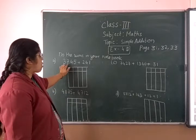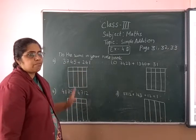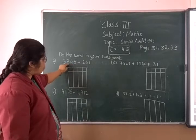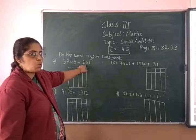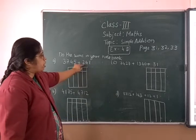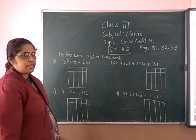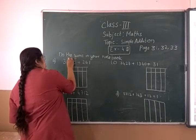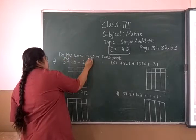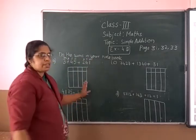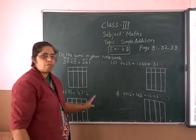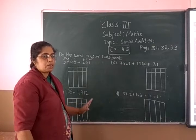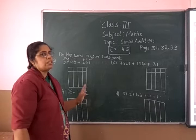So now see — 3,000. First of all, you read the number. Read the number, then only you solve. Read 3,745. 3,745 plus 2,000. So what you have to write in the box — you write all the numbers: 1, 10, 100 and 1,000. Every time you will start writing the number from the 1s space. Remember, every time you have to start writing the number from the 1s space. Don't start from 1,000 — that would be wrong.